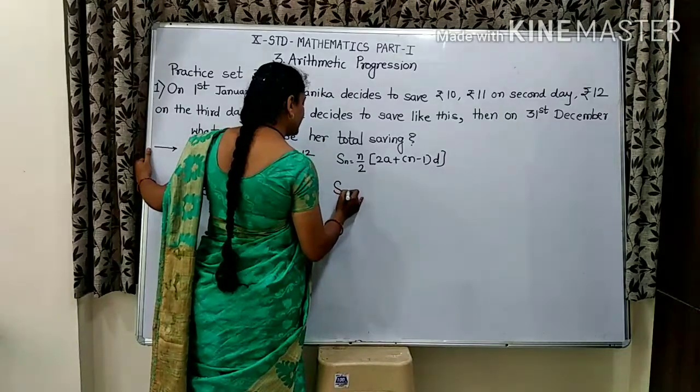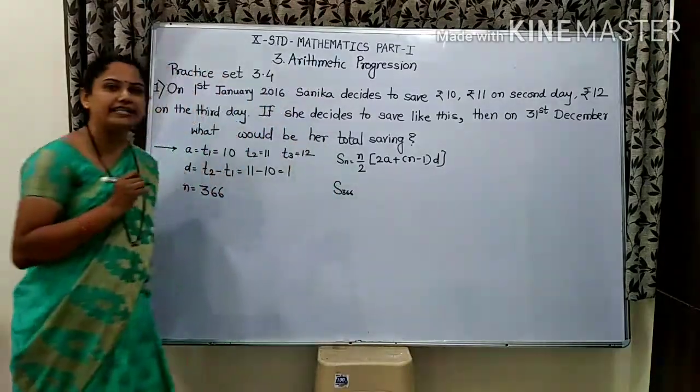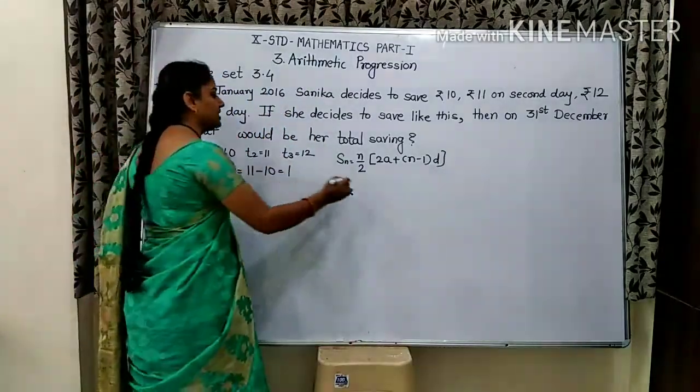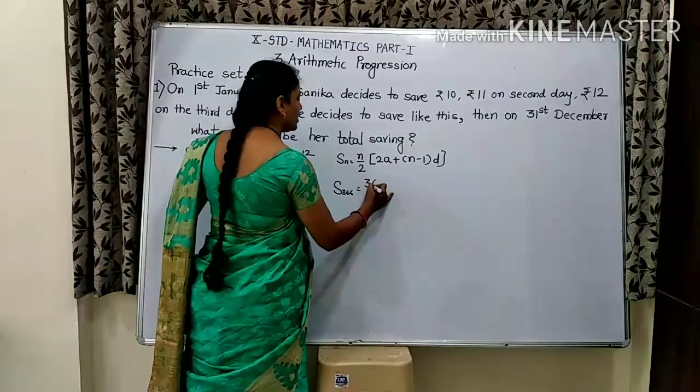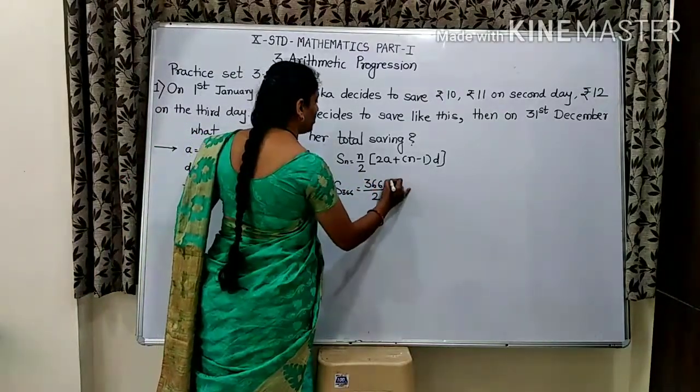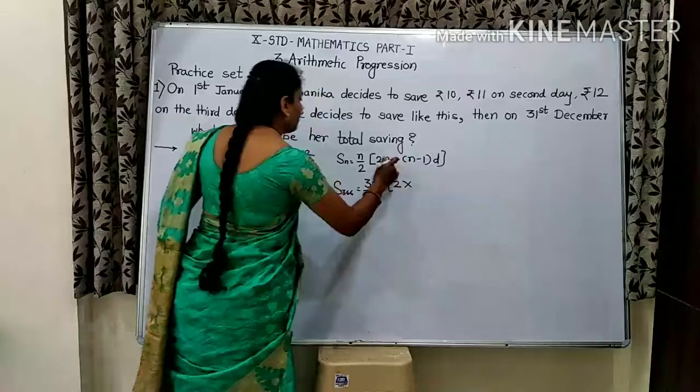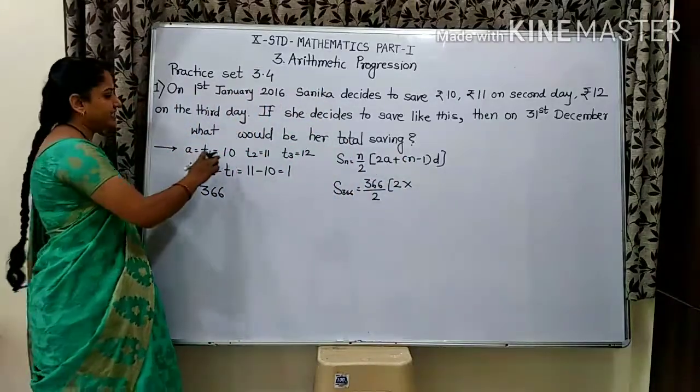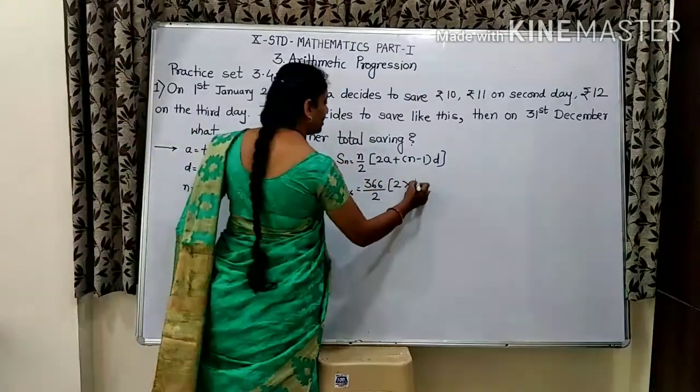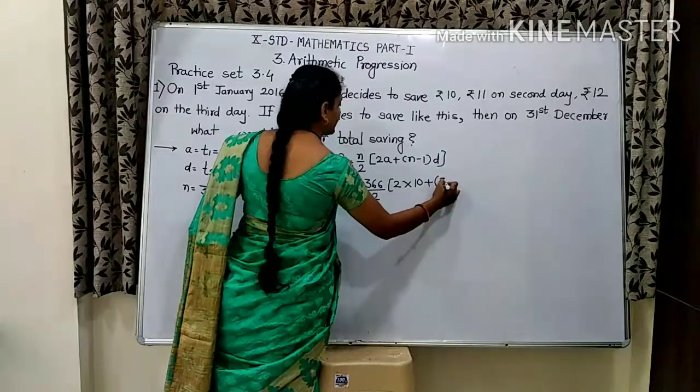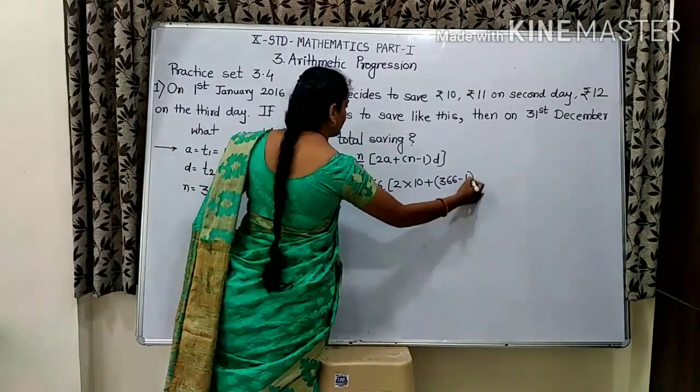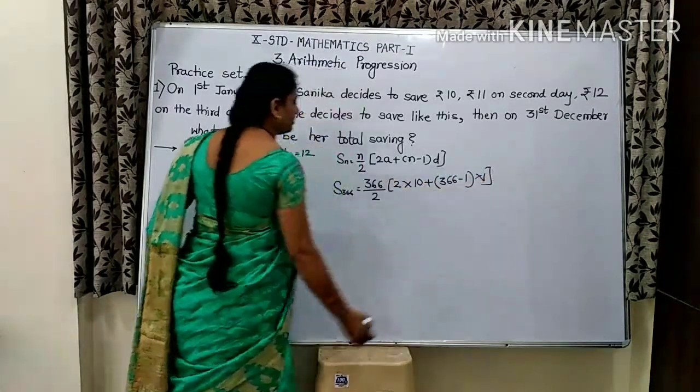Total number of days is 366. So, N is equal to 366. We place N as 366. First term A is equal to 10 plus N 366 minus 1 and difference is 1.